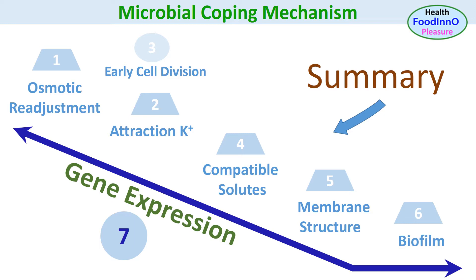The contents are divided into three parts. The first part includes points 1 to 4, the second includes points 5 and 6, and the third covers point 7 — that is, changes in gene expression.